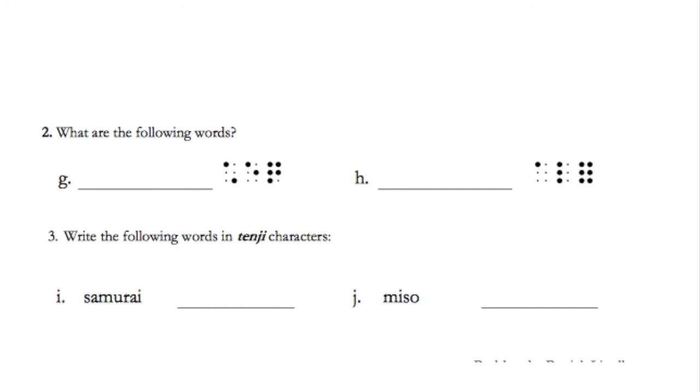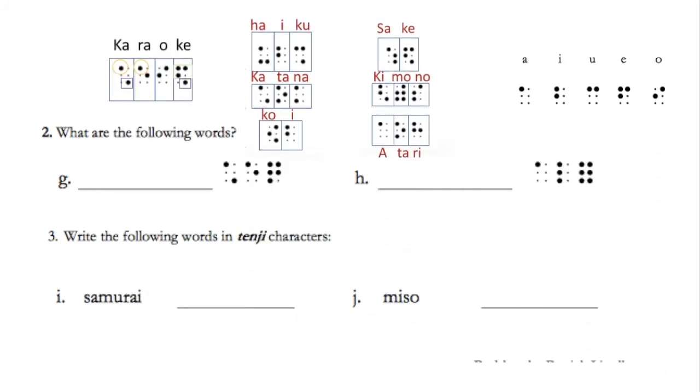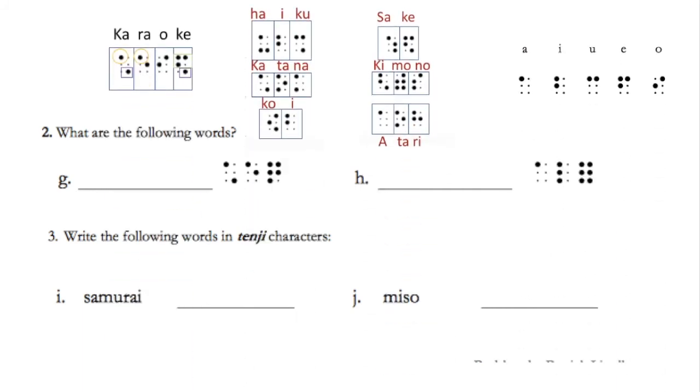Now, moving on. From the first part of the question, we already figured out these clues, the vowels and the above syllables. From these, we look at question 2G. By simply comparing, the first two syllables are ka and ra.